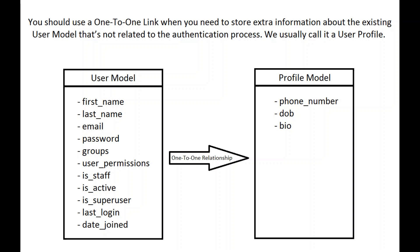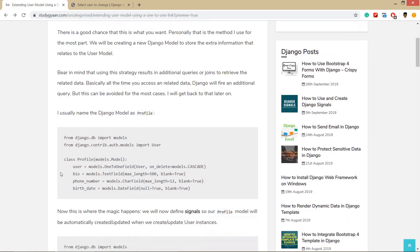We usually call this a user profile. Django's default user model already has many fields, but it doesn't have phone number, date of birth, or bio. To add these fields, we extend using a one-to-one relationship with a profile model. That is why we need a one-to-one relationship linking the user model and this profile.